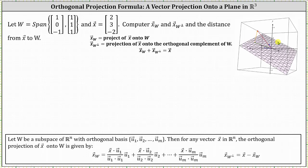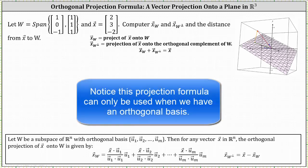Welcome to an example on how to use your orthogonal projection formula to determine a vector projection onto a plane in R3. To begin, let W be a subspace of Rn with orthogonal basis containing the vectors u sub one through u sub m. Then for any vector x in Rn, the orthogonal projection of vector x onto W is given by the formula shown here.